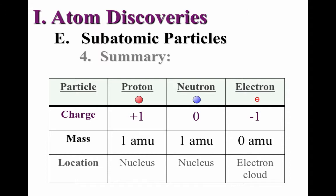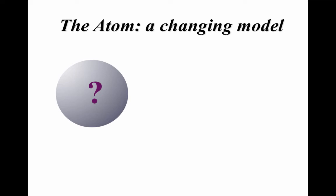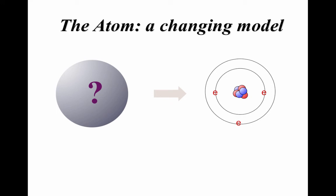It wasn't until years later we began to understand where electrons exist, and it's still kind of tricky to describe their locations. Sometimes we describe them in orbits, or electron clouds, or shells, but for now we'll just say they're outside of the nucleus. Through the work of several scientists located in different countries but working together, our concept of the atom was developed — from a vague idea of indivisible particles making up all matter, to the work of Thomson, Millikan, Rutherford, and others who changed that model to a more accurate representation of atoms. It's that model that we're going to continue to build on as we build our understanding of matter.